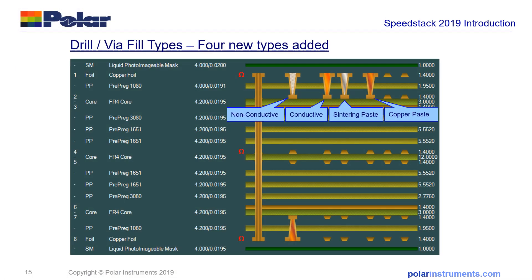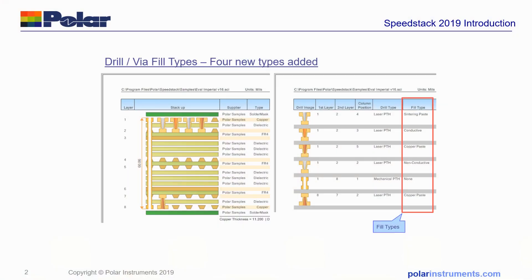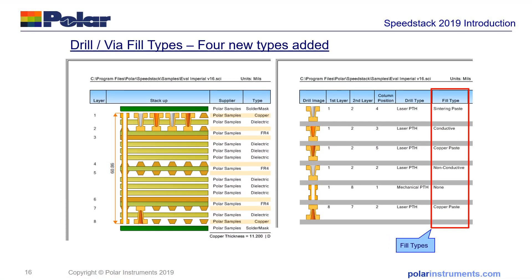Here you can see the four types — non-conductive, conductive, sintering paste, and copper paste — as they'd appear in the stack-up. And on this slide, you can see how those materials would appear in the printout in the SpeedStack report.